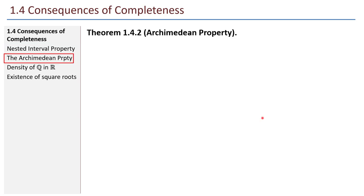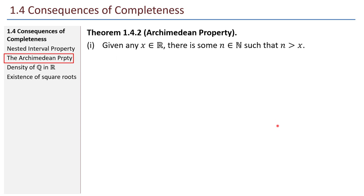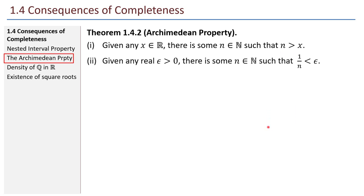Our next big idea is the Archimedean property — the kind of thing that seems obvious but is a nice useful fact we will use a lot. Number one: given any real number x, there is some natural number n such that n is greater than x. Number two: given any real epsilon greater than zero, there is some natural number n so that 1/n is less than epsilon. Part one says we can make natural numbers arbitrarily large; part two says we can make 1/n arbitrarily small.